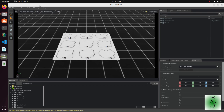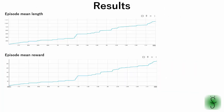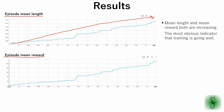With an RTX 4070 GPU, training will take about 5 hours. Let's see the training metrics. These are the results for episode mean length and episode mean reward — both are increasing throughout training. This means that the agent is surviving longer, exactly what we want for a line tracer type robot. The stepwise jumps are normal; PPO often improves in bursts.